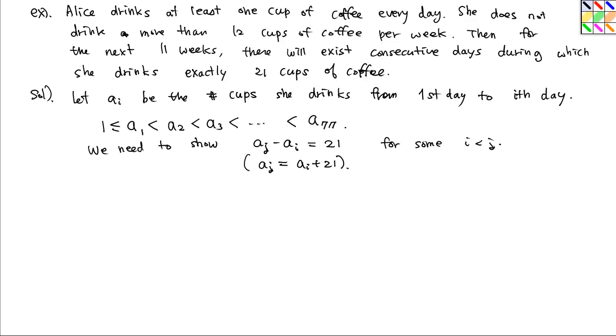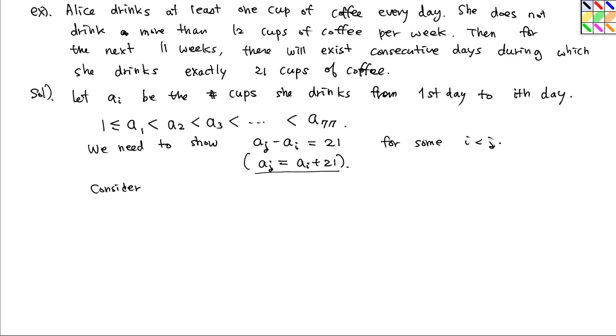So we want to show that there are two integers satisfying this condition. So let's consider another sequence: a1 + 21, a2 + 21, ..., a77 + 21.